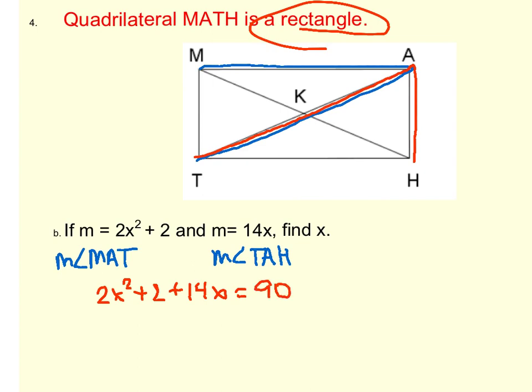In order to solve this, we have to think back to the algebra unit. Notice that we have both an x squared term and an x term, so the only way of solving this is to use factoring. In order to use factoring to solve, it has to be equal to 0, so first we're going to subtract the 90.